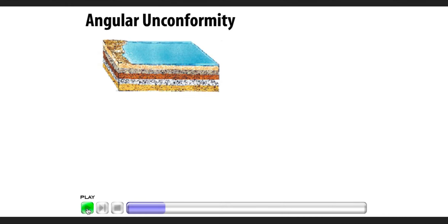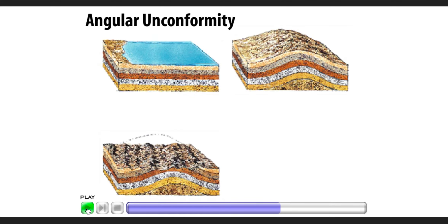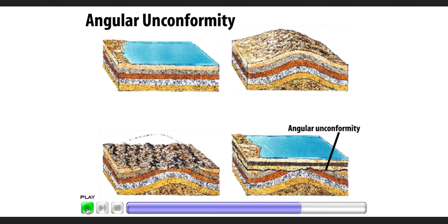First, sedimentary rocks are deposited originally as horizontal layers. Then the horizontal rock layers are tilted as forces within Earth deform them. Next, the tilted layers erode. An angular unconformity results when new layers form on the tilted layers as deposition resumes.